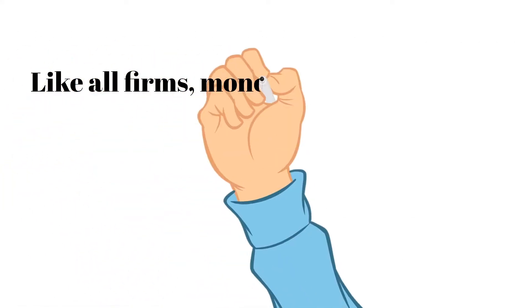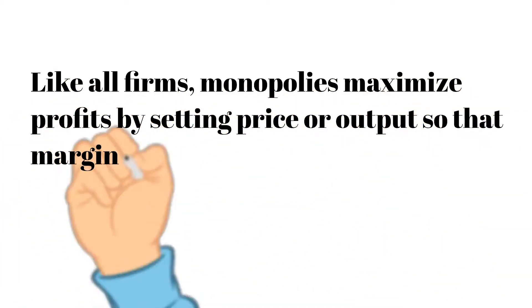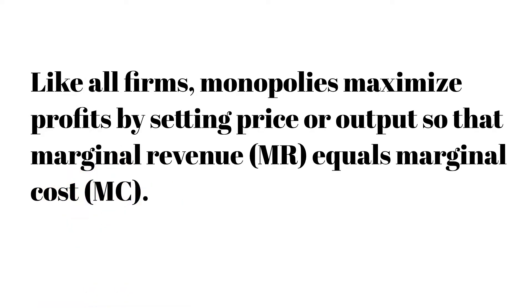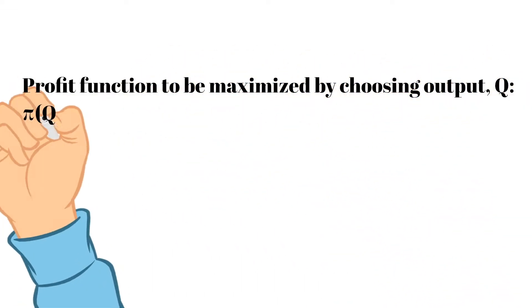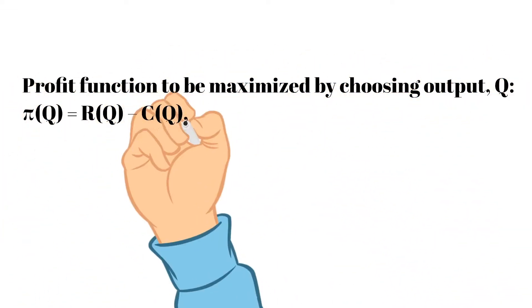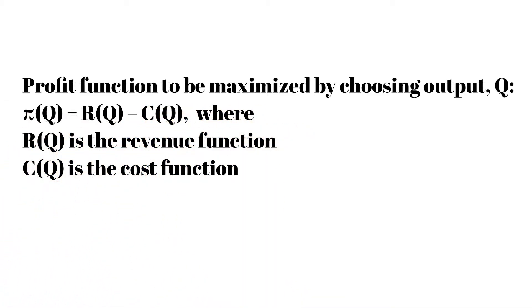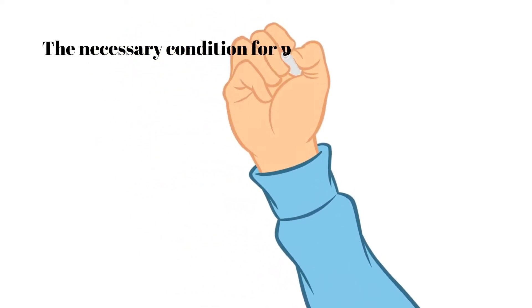A monopoly, like any firm, maximizes its profit by operating where its marginal revenue equals its marginal cost. A monopoly chooses output to maximize its profit by using the necessary condition, which is marginal cost equals marginal revenue.